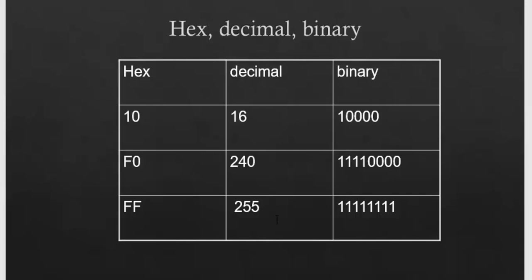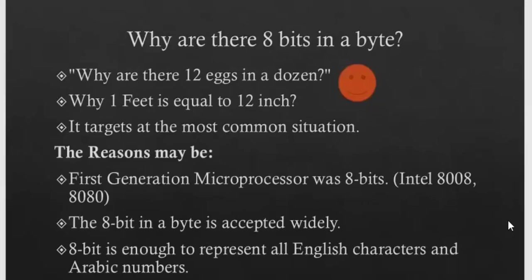Why are there 8 bits in a byte? It's like asking why are there 12 eggs in a dozen or why 1 foot equals 12 inches - it targets the most common situation. First generation microprocessors were 8-bit, like Intel 8008 and 8080. The 8-bit byte is accepted widely, and 8 bits are enough to represent all English characters, symbols, and Arabic numbers.